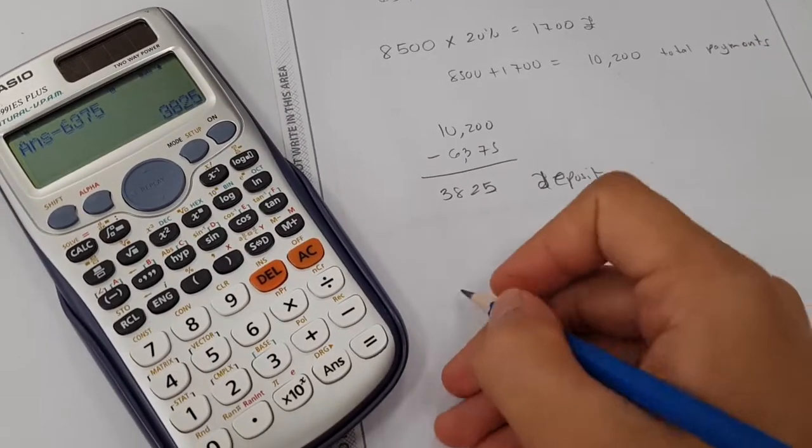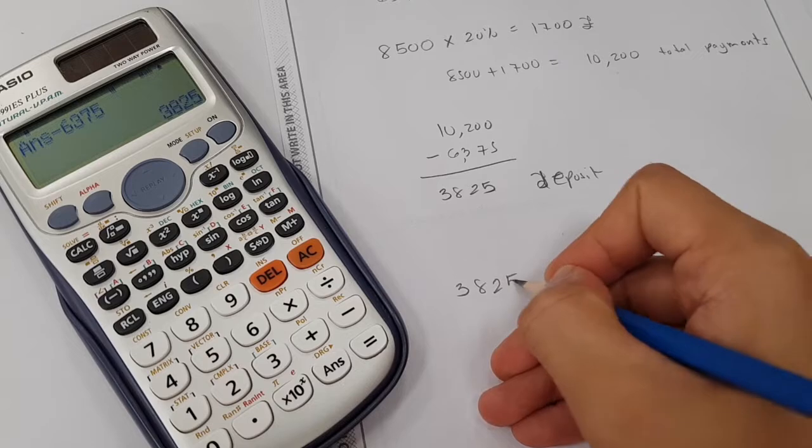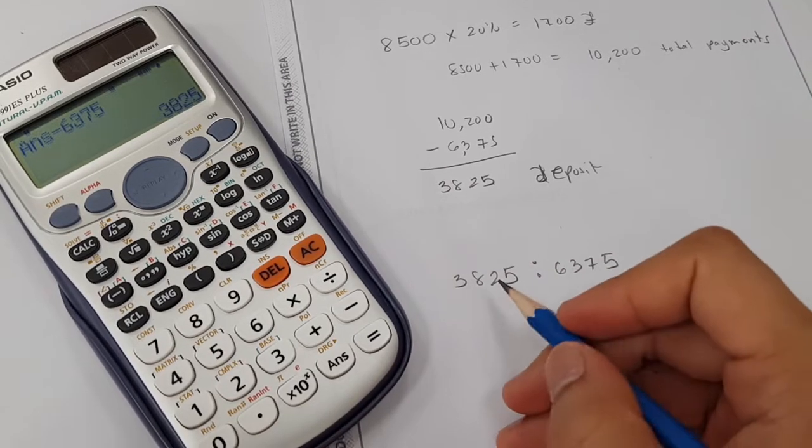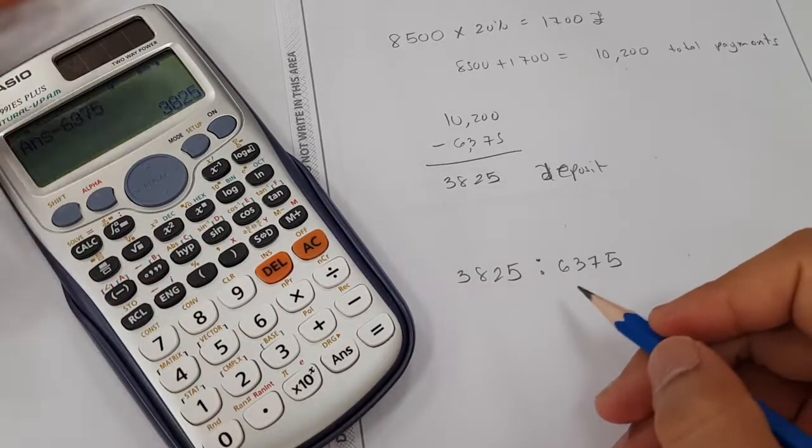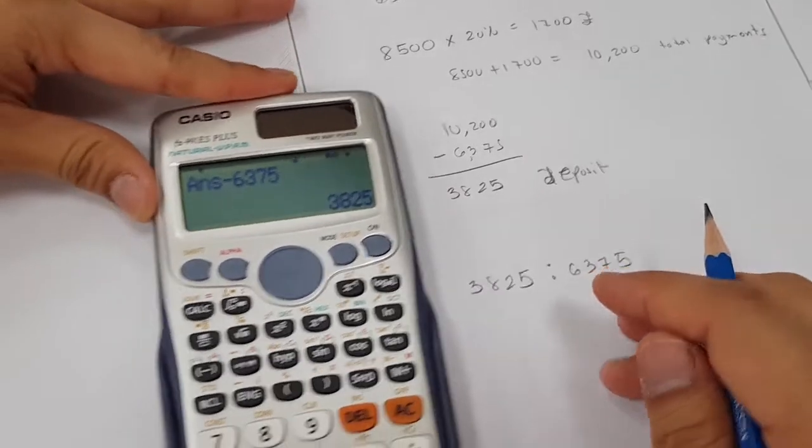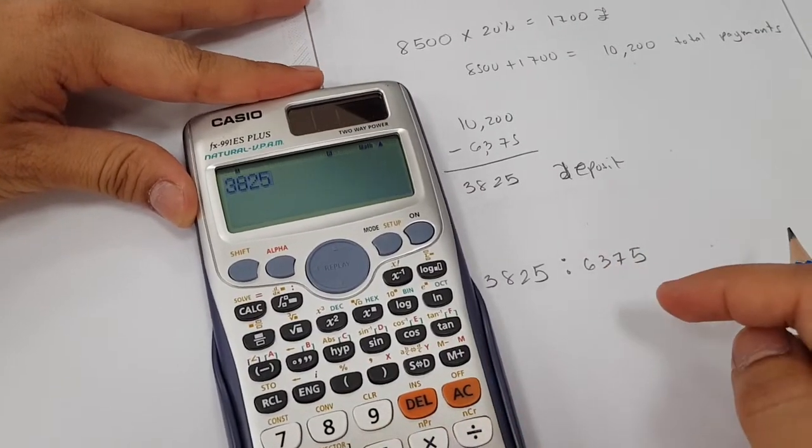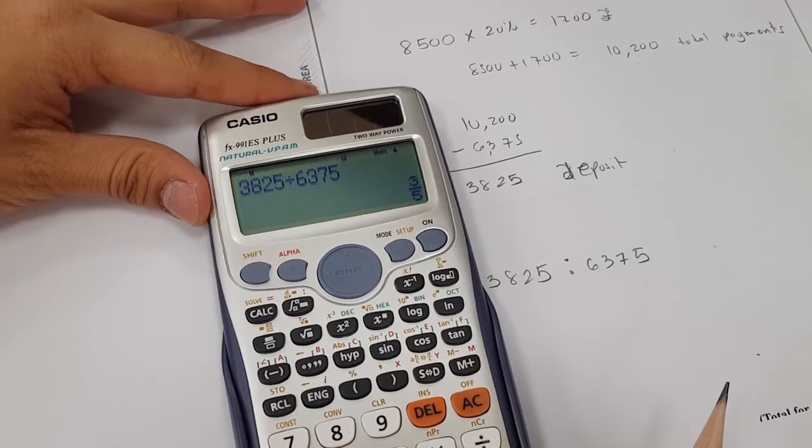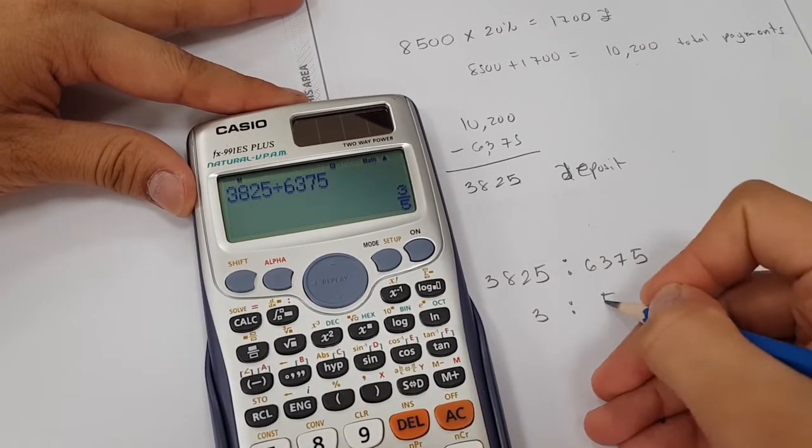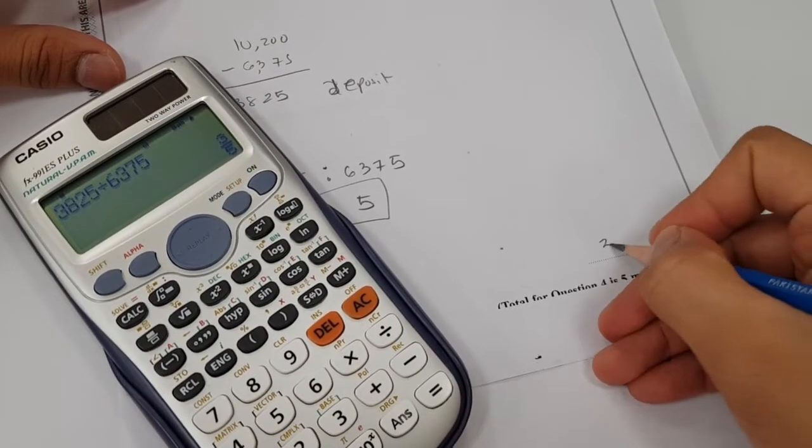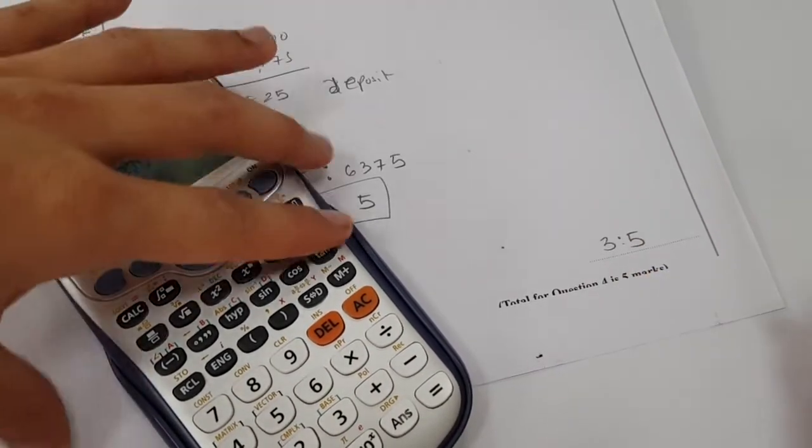So our deposit is £3,825 is to £6,375. You could divide them by 5, or by any number that you think, until you get the lowest term, or I will just use calculator. I got 3 over 5, which means 3 is to 5. So that would be our answer.